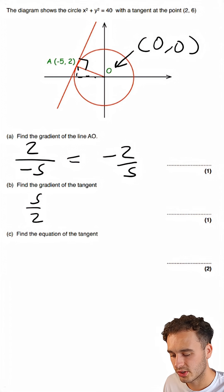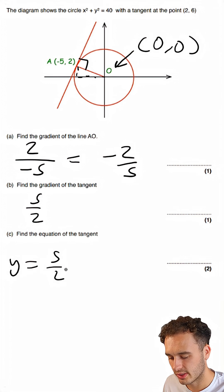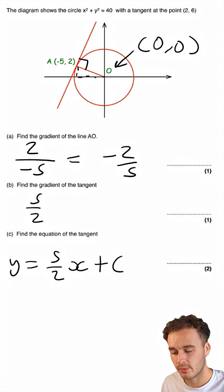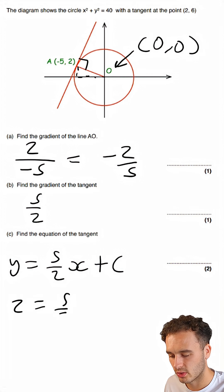To find the equation of the tangent, part C, first we need to understand that the equation so far is Y equals 5 over 2X plus C. And then we know (-5, 2) is a coordinate on this tangent line. So we can sub in 2 as Y, 5 over 2, times minus 5 plus C.